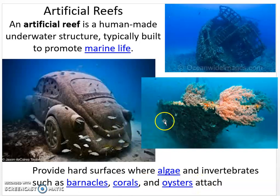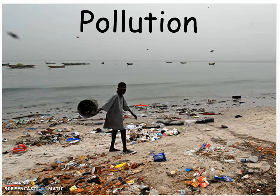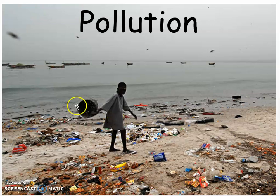Here are three examples of artificial reefs. Another way humans have impacted ocean ecosystems is pollution. Pollution is very detrimental to the ocean ecosystem. In this picture, you see a lot of trash and garbage on the beach area, and when the tide comes in, it pulls all of that trash into the ocean.